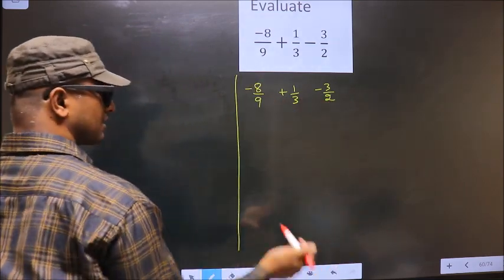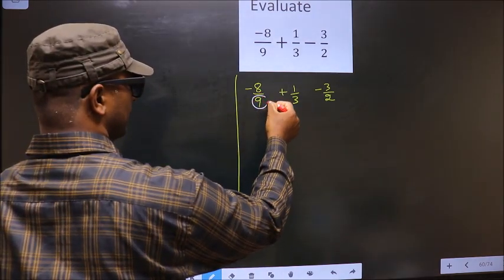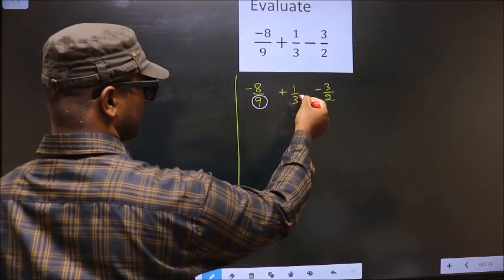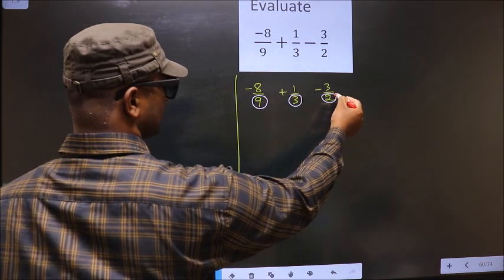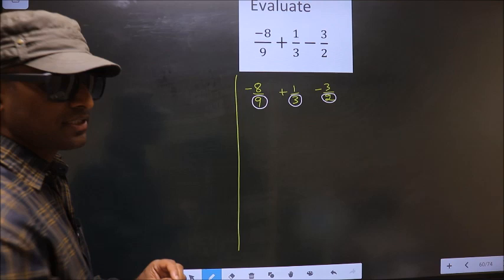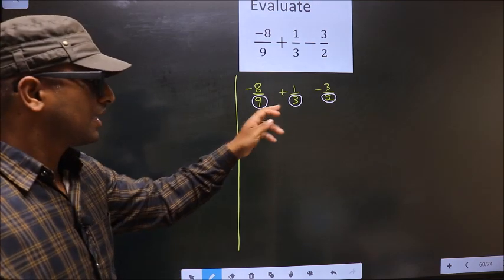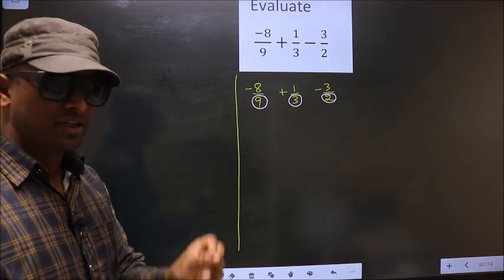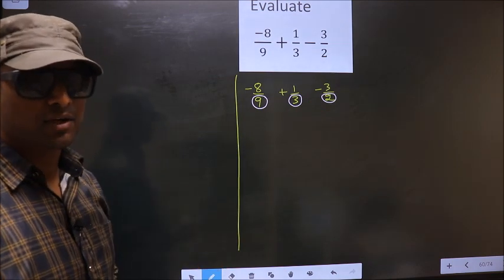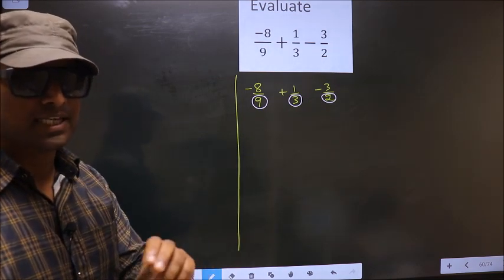In this fraction the denominator is 9. Here the denominator is 3. Here the denominator is 2. As you observe, the denominators are not same. Whenever the denominators are not same, we should take LCM of them.